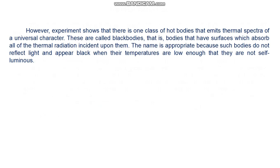Generally speaking, the detailed form of the spectrum of the thermal radiation emitted by a hot body depends somewhat upon the composition of the body. However, experiment shows that there is one class of hot bodies that emits thermal spectra of a universal character. These are called black bodies — that is, bodies that have surfaces which absorb all of the thermal radiation incident upon them. The name is appropriate because such bodies do not reflect light and appear black when their temperatures are low enough that they are not self-luminous. One example of a nearly black body would be any object coated with a diffuse layer of black pigment such as lamp black or bismuth black.